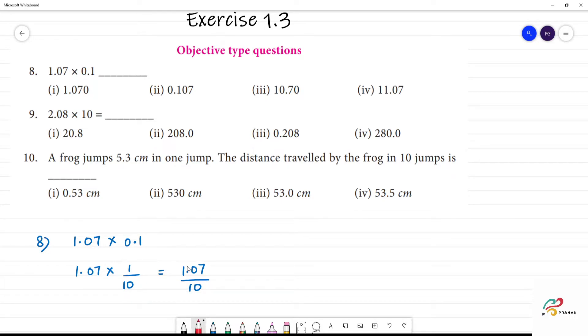How do we find the decimal? The decimal moves to the left-hand side. The decimal is here. 0.107. So the answer is this one. Clear?